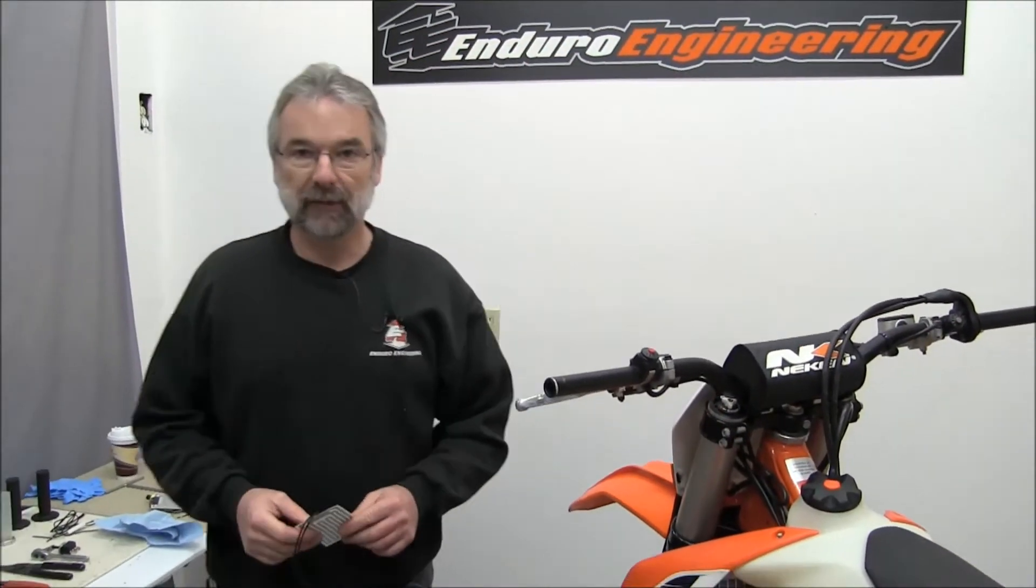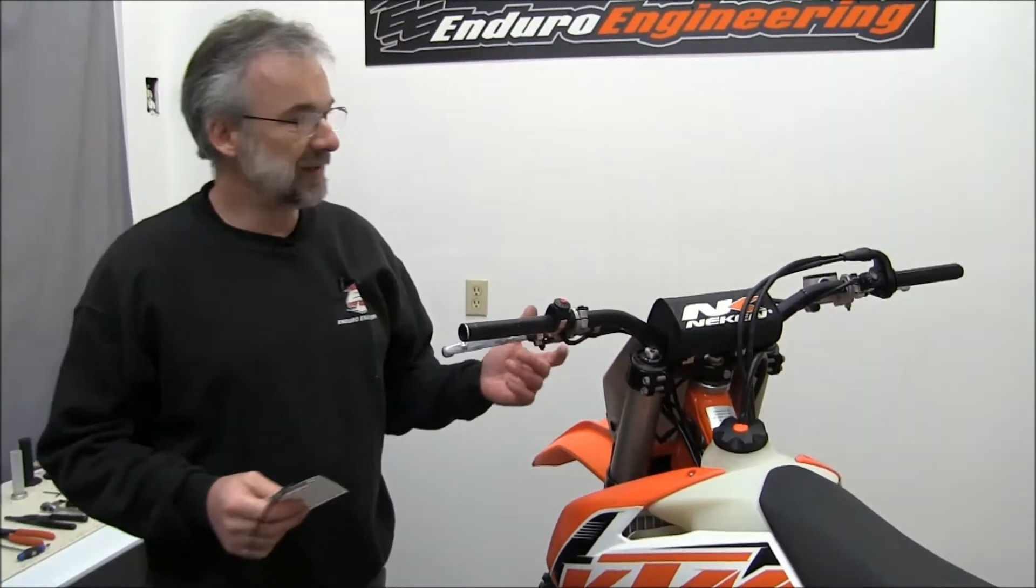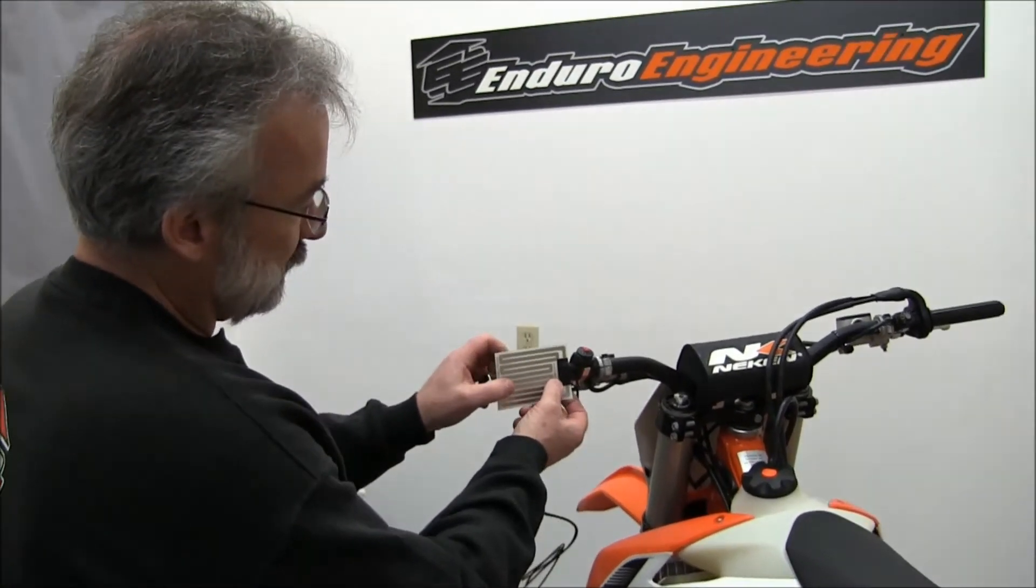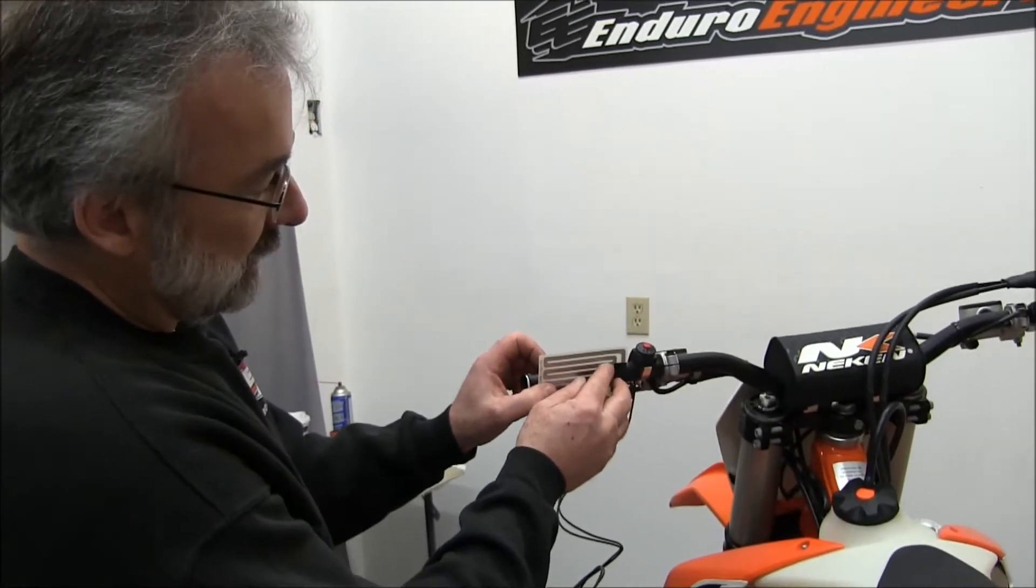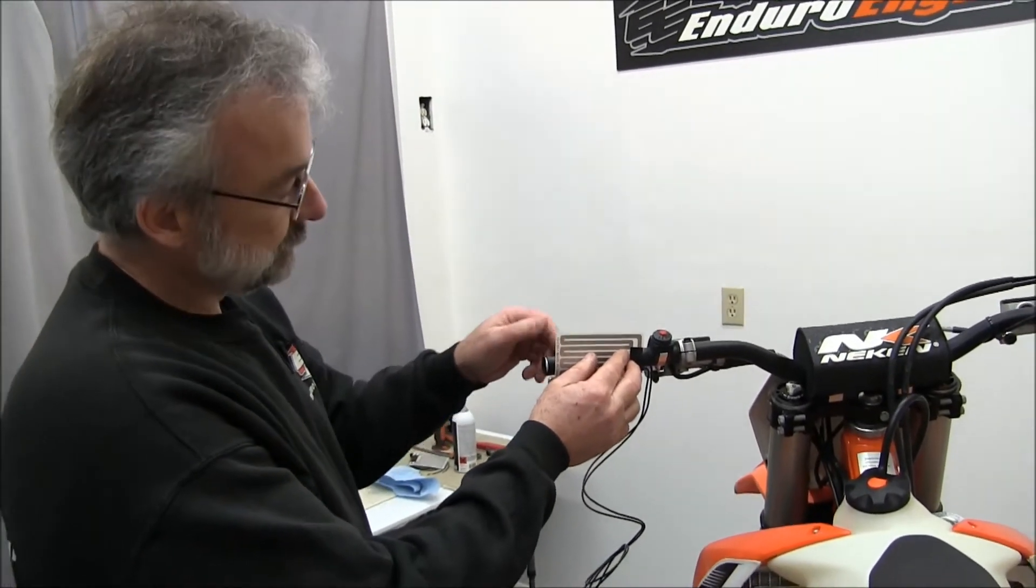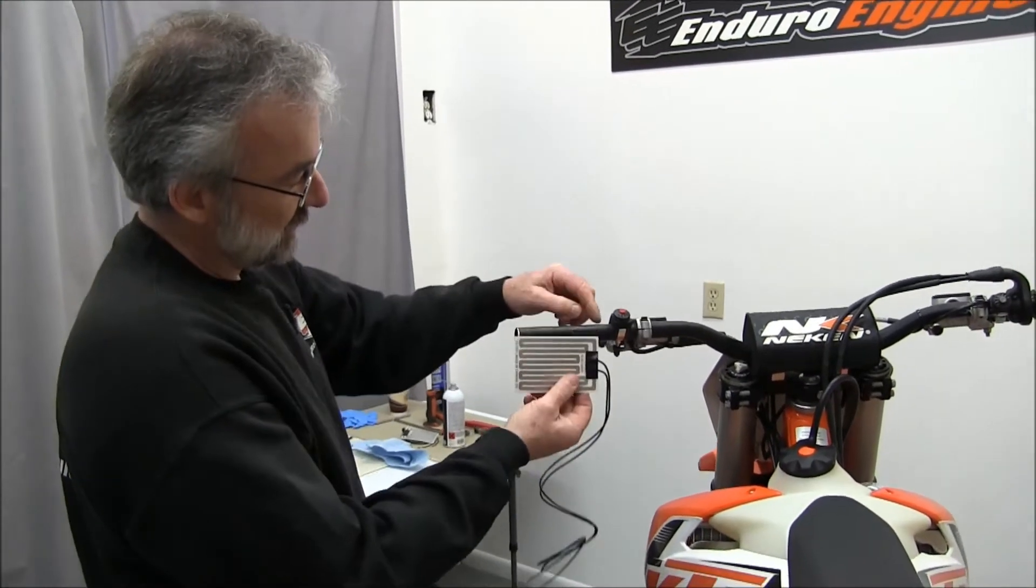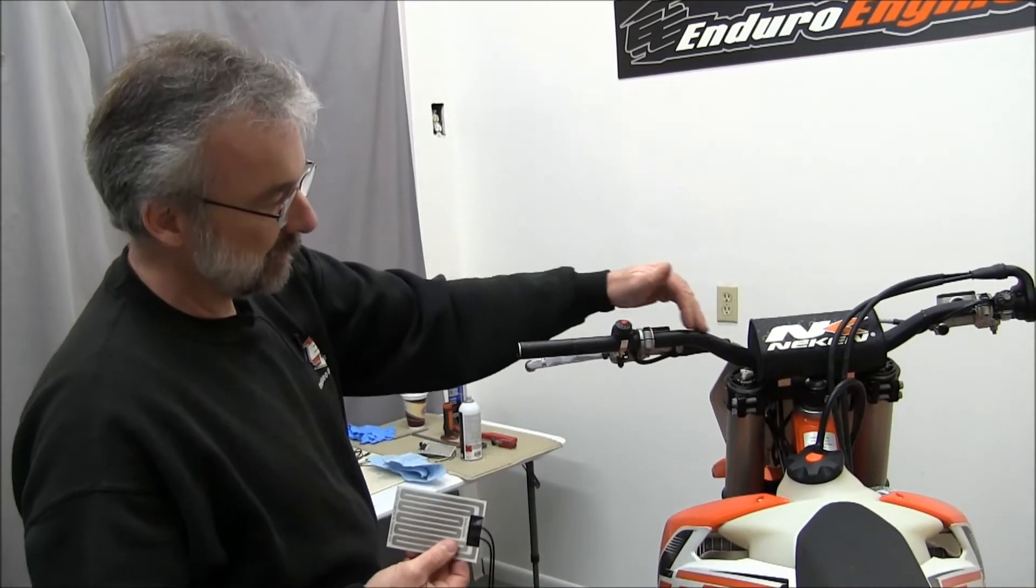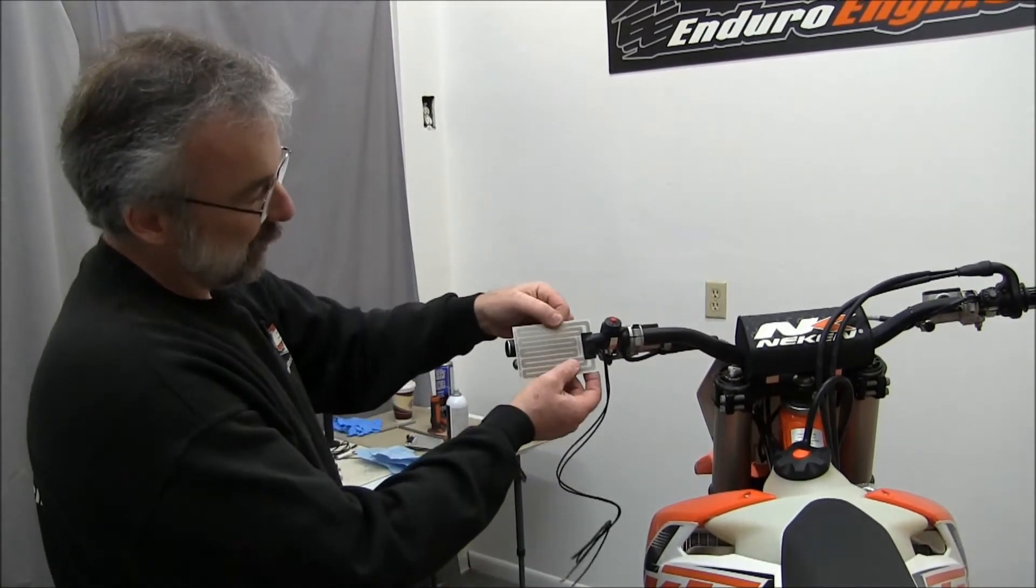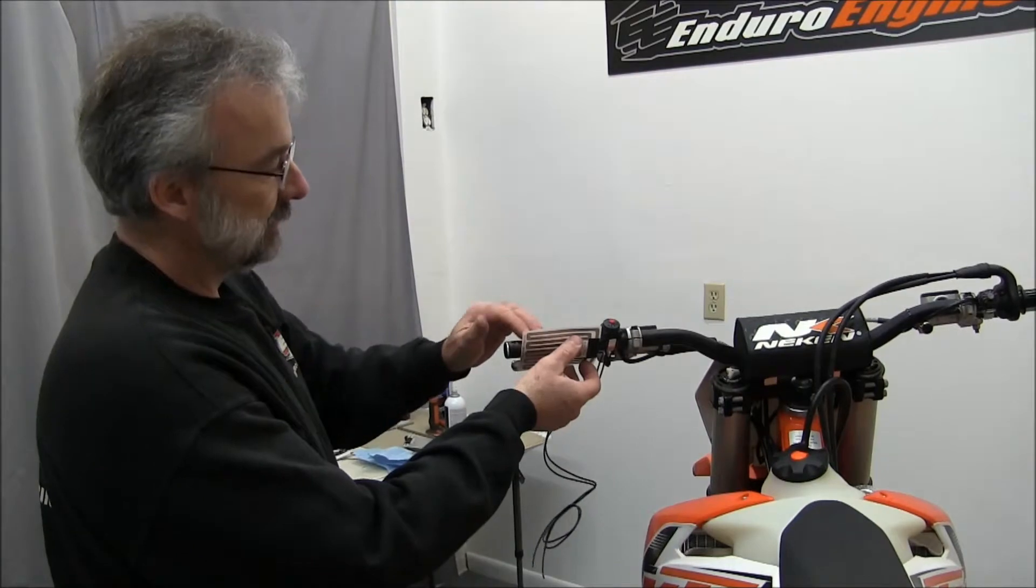If you've ever had heated grips on a bike before, you'll notice that probably the throttle side would get warmer than the left side. The reason for that is when you apply this heat element directly to the aluminum handlebar, what happens is the aluminum handlebar when it's cold out sucks most of the heat away from this heat element.